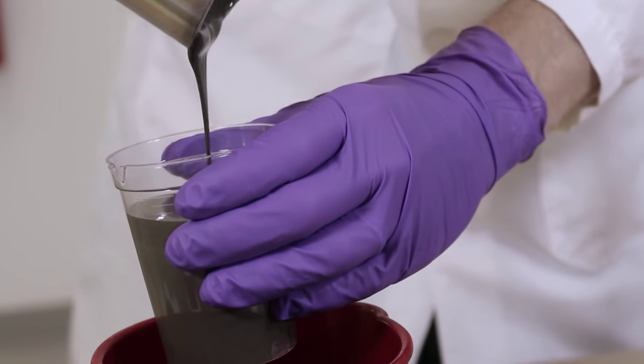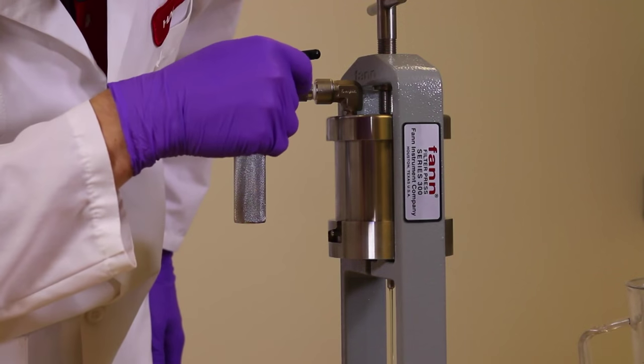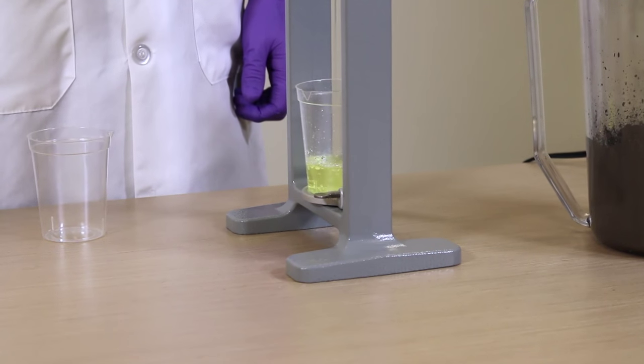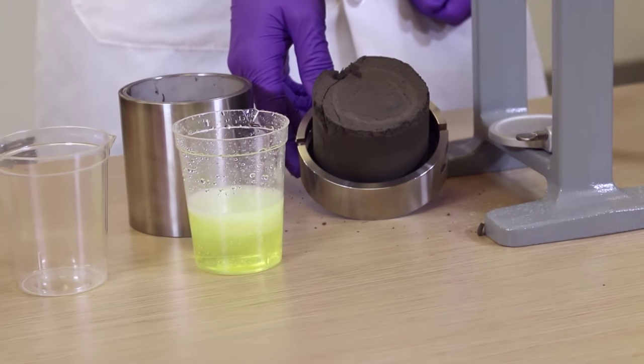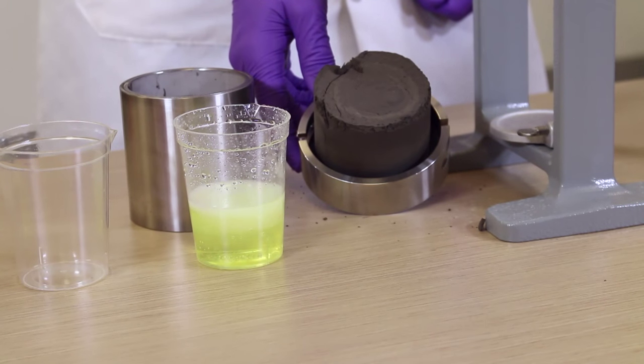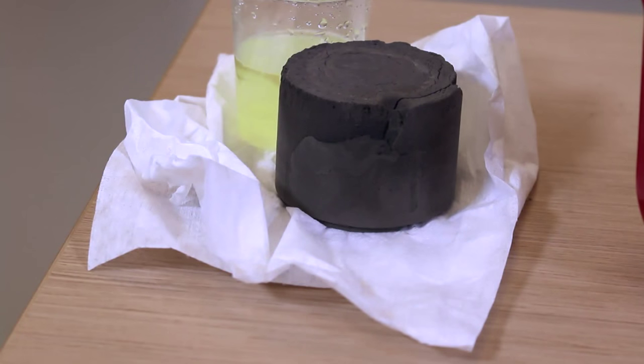To recap what we've seen, when we put neat cement in the filter press, we were able to drive off all of the water in about 30 seconds. That gave us a very soft, unstable mass of compacted solids, essentially mush. It's important to remember that the water is necessary for the chemical reactions to take place to actually form cement.